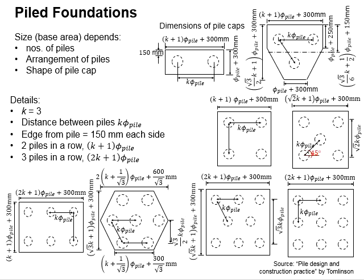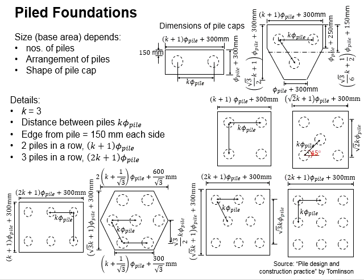It is determined by dividing the vertical load by the capacity of the piles. Therefore, the pile foundations can appear in various numbers of piles, from 2 units of piles, 3 units of piles, up to 9 units of piles.